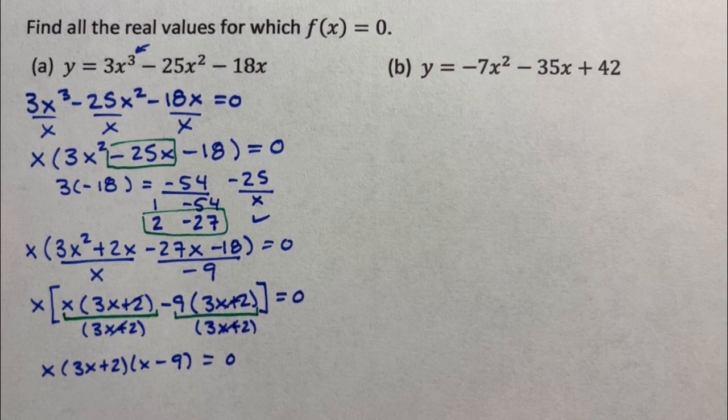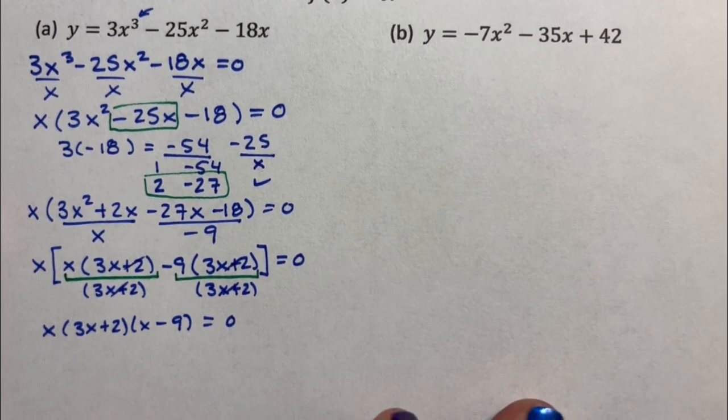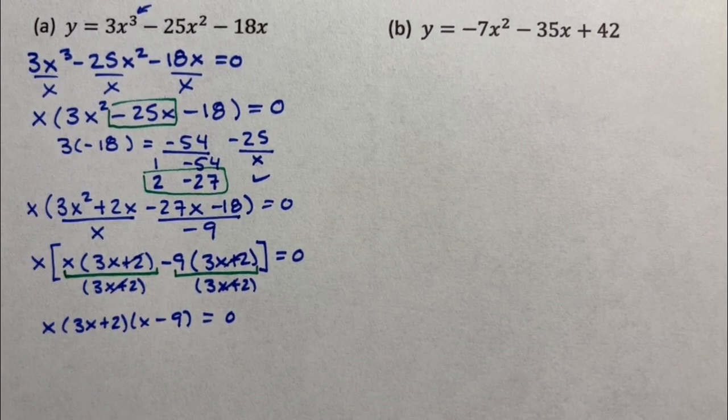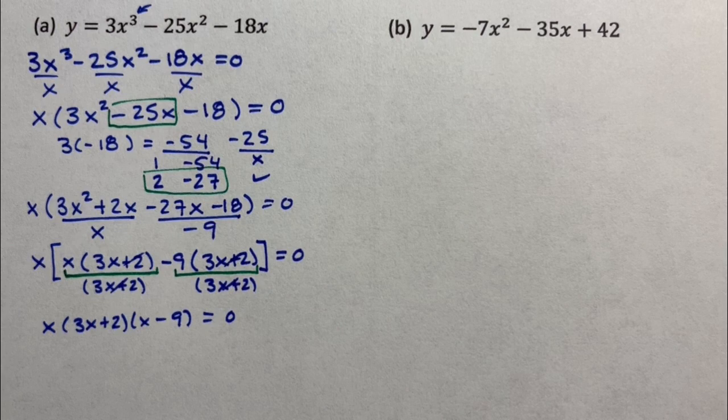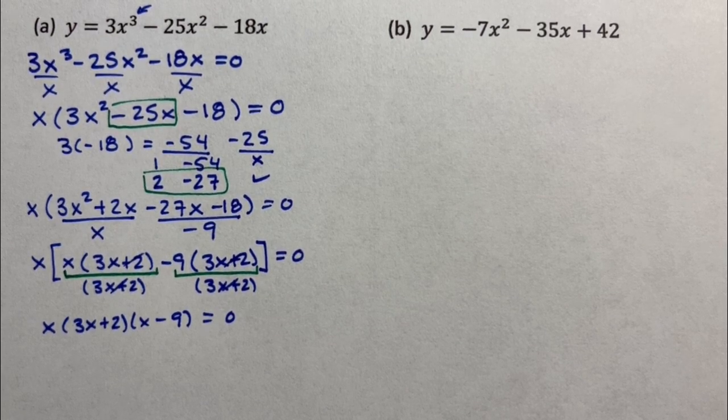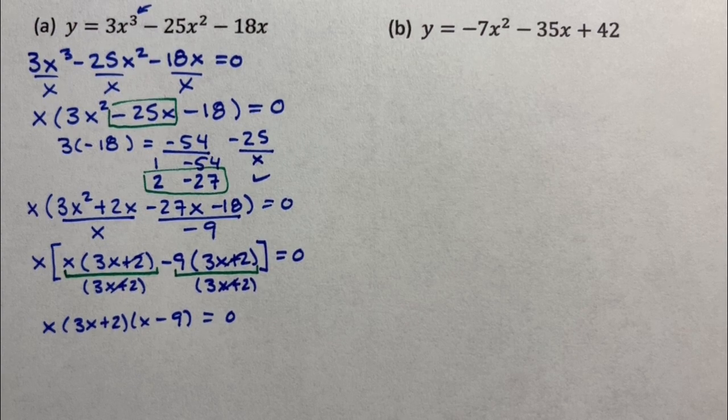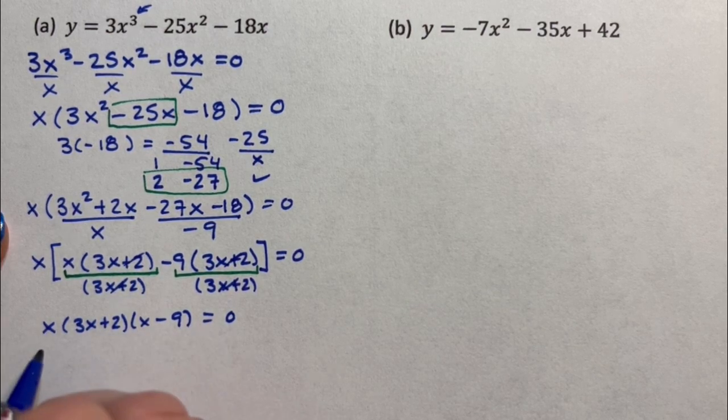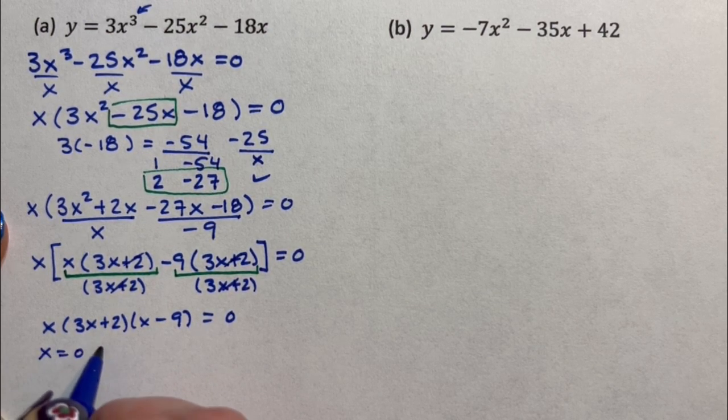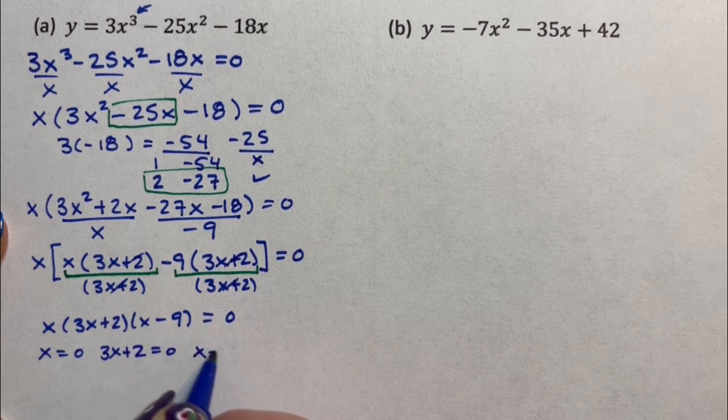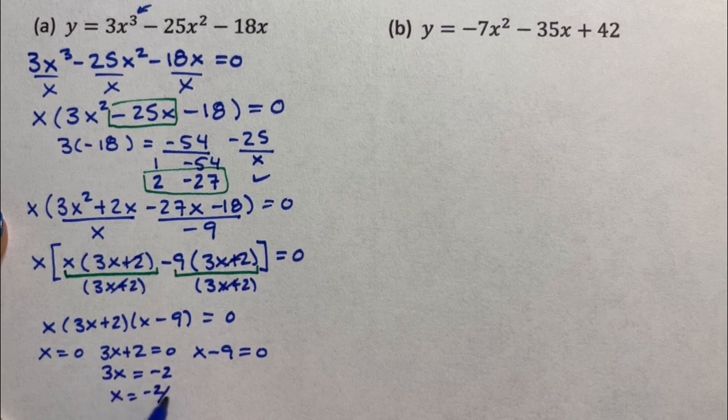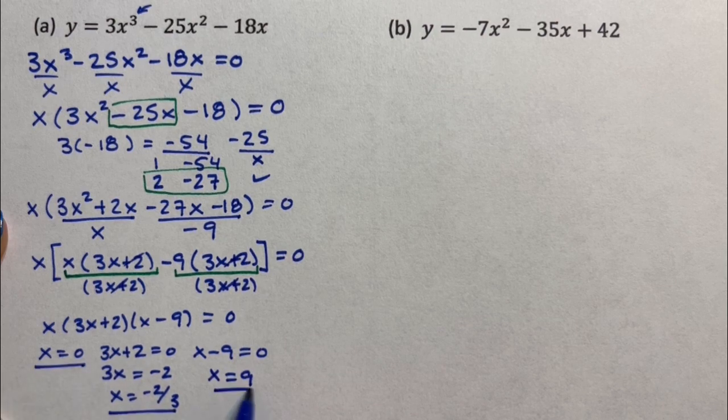Then, the only way things multiply out to be 0 is if one of them is equal to 0. There is nothing that says if two numbers multiply to be 10, one of them has to be 10. But if two numbers multiply to be 0, one of them has to be 0. Zero is the only number that that's true for. So we know for a fact either x = 0, 3x + 2 = 0, or x - 9 = 0, which means 3x = -2. When x is -2/3, x is 9. So those are my three answers: 0, -2/3, or 9.